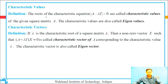Characteristic values: the roots of the characteristic equation det(A minus lambda I) equal to 0 are called characteristic values of the given square matrix A. The characteristic values are also called eigenvalues. Next definition, characteristic vectors: if lambda is the characteristic root of a square matrix A, then a non-zero vector X such that A minus lambda I times X equals 0 is called the characteristic vector of A corresponding to the characteristic value lambda. The characteristic vector is also called the eigenvector.